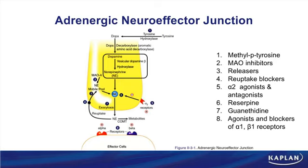A second thing that can happen: norepinephrine can be metabolized by COMT. Catechol-O-methyltransferase converts norepinephrine into inactive metabolites. However, that is not the most important reaction for limiting NE's actions. The primary way you limit norepinephrine in the synapse is rapid reuptake into the presynaptic nerve through a sodium-potassium ATPase transporter.